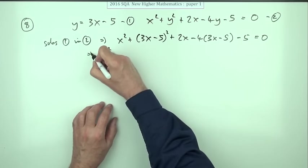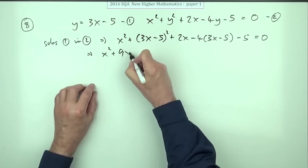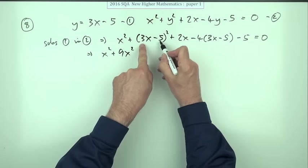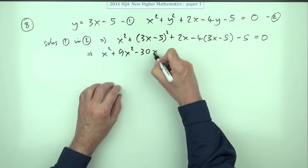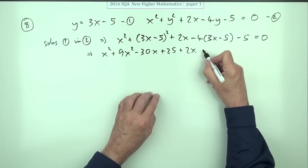So squaring the first, 3x times 3x would be 9x squared. Twice the product, the product is minus 15, double it will be minus 30x. Square the last plus 25. Minus four times three is minus 12x but plus 20, and then minus the five is zero.